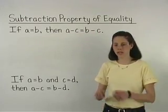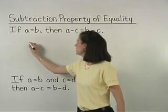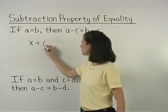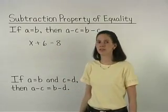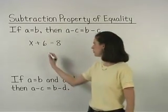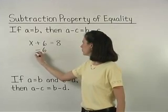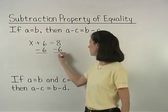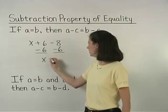For example, if we have the equation x plus 6 equals 8, then the subtraction property of equality allows us to subtract 6 from both sides of the equation to get x equals 2.